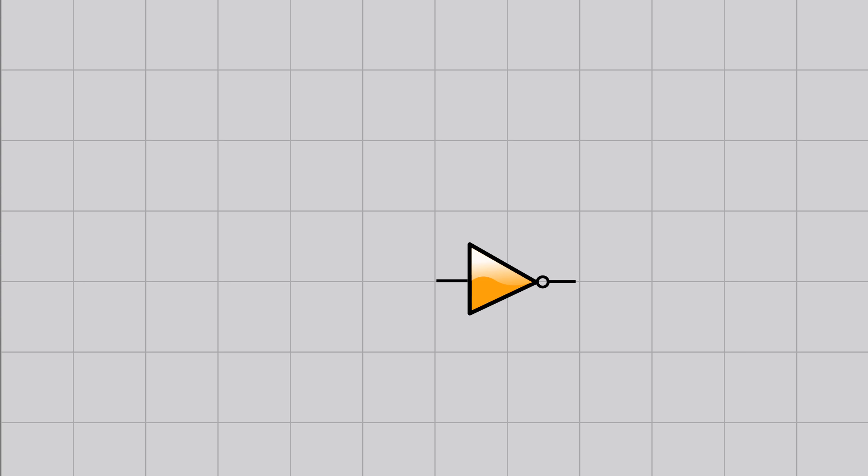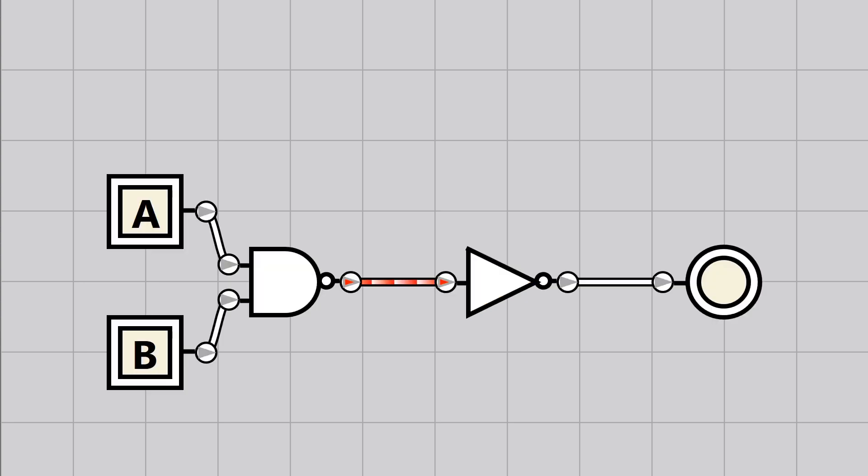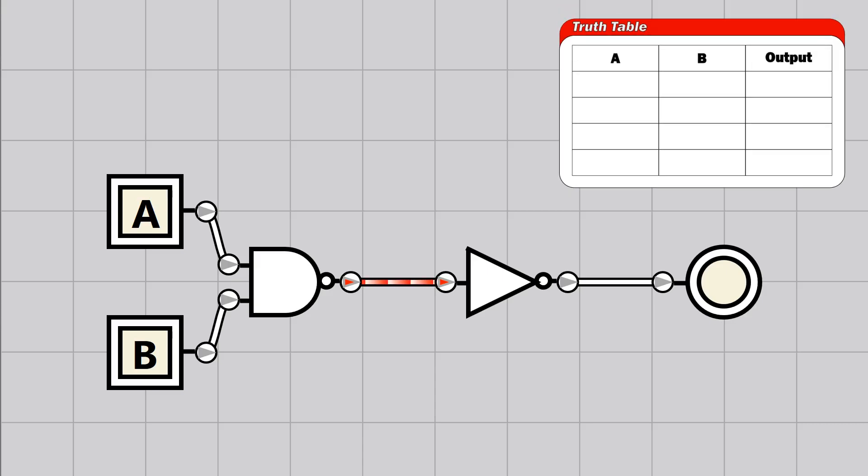So let's take our NOT gate and use it to make some gates that are a little bit more intuitive. If we take a NAND gate and place a NOT gate on its output, it will cancel out the inversion. Let's go through the truth table again and we'll see what's changed. When A and B are off, now the output is also off.